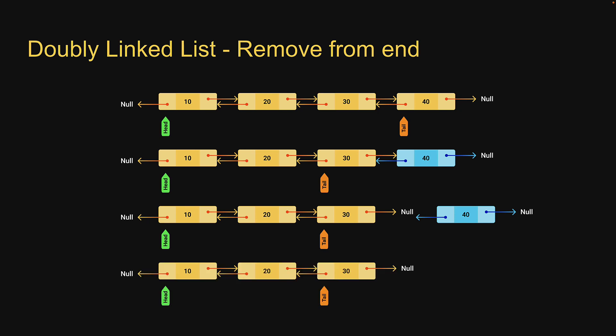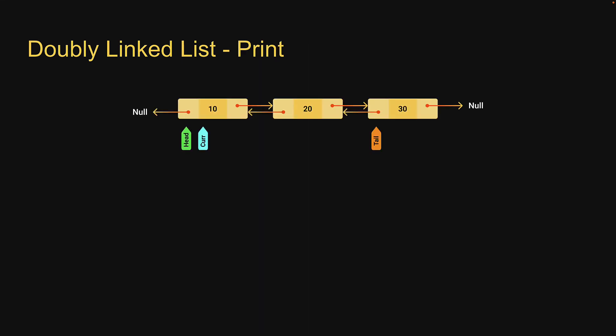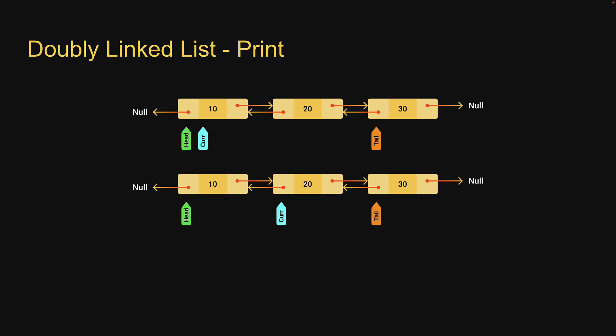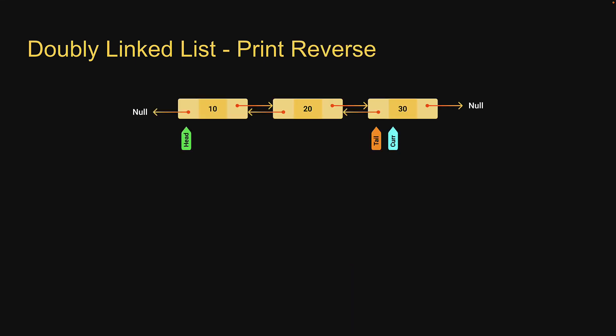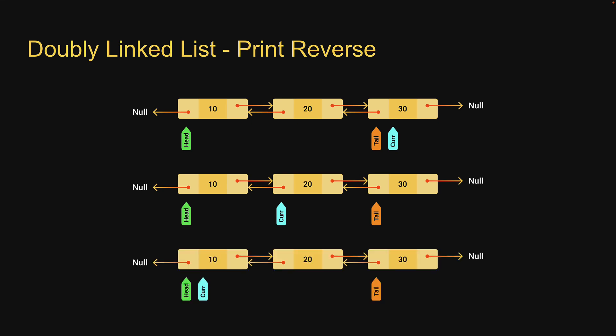As you can see, insertion and deletion at both ends in a doubly linked list has constant time complexity. If you want to print the list, start at head and travel till the tail using the next field on each node. If you want to print the list in reverse, start at tail and travel till the head using the previous field in each node.